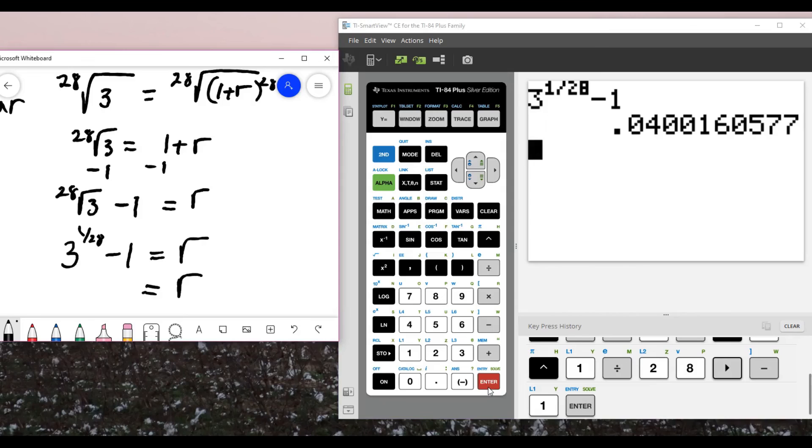And our rate is 0.0400. And we typically write these rates in percentage form. So I'll move the decimal point two places to the right to get 4%. So we would need a 4% interest rate to triple our money in 28 years.